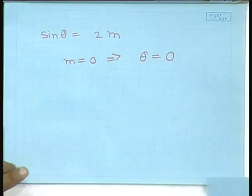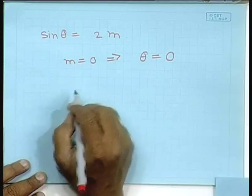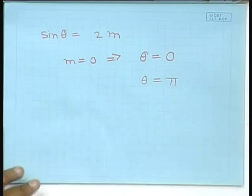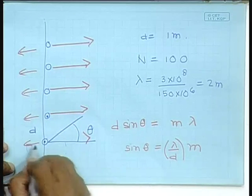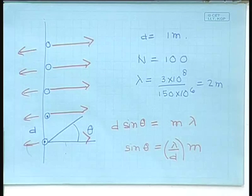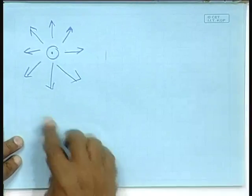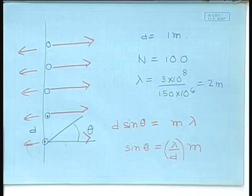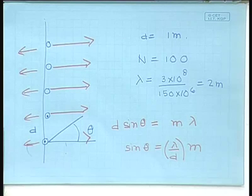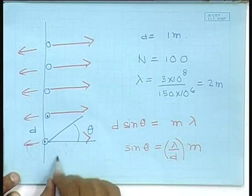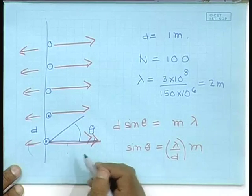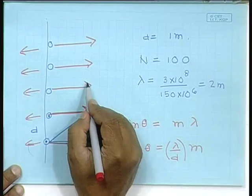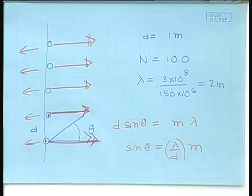So there is only one solution: all the radiation comes out in the direction θ = 0, i.e., the forward direction. Equivalently, sin θ = 0 also has a solution θ = π, the backward direction. When we had only one dipole it emitted equally in all directions in the plane, but now with an array of 100 dipoles, there is only one maxima in the forward direction and one in the backward direction.